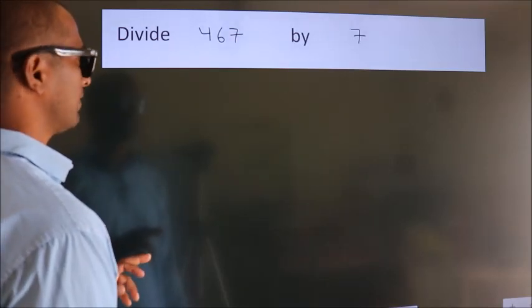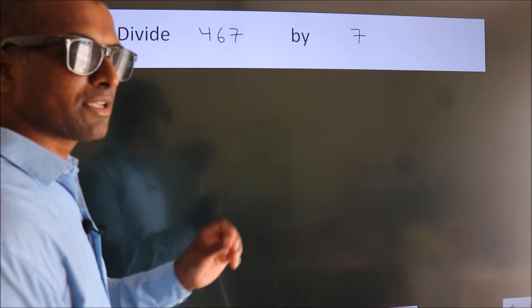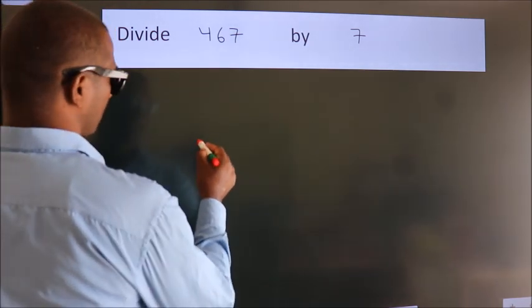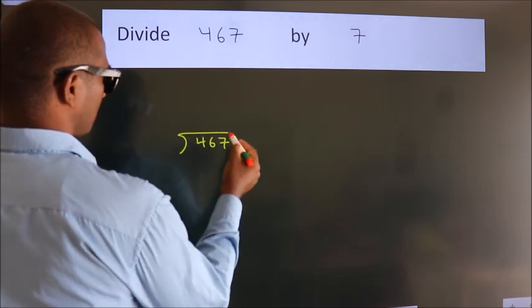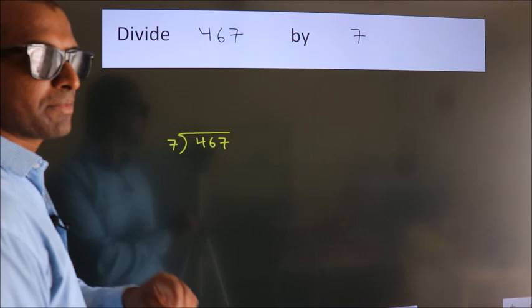Divide 467 by 7. To do this division, we should frame it in this way: 467 here, 7 here. This is your step 1.